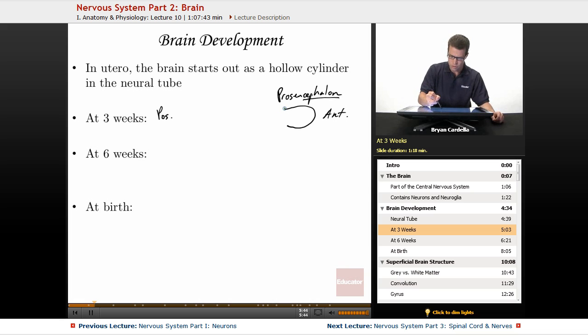The next part is the mesencephalon. I'm just going to write 'mesen'—it has cephalon after it, of course. Finally, at the back end, the posterior part, is the rhombencephalon. That's at three weeks, usually before a woman even knows she's pregnant.